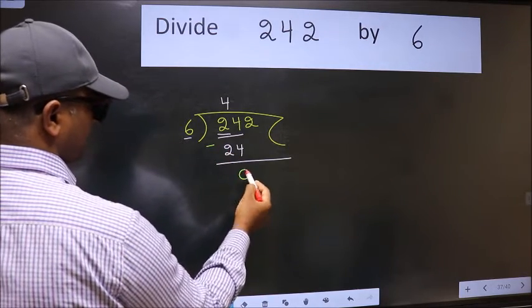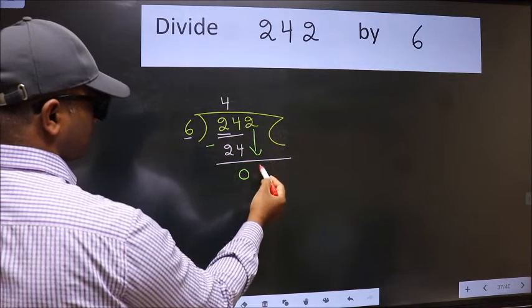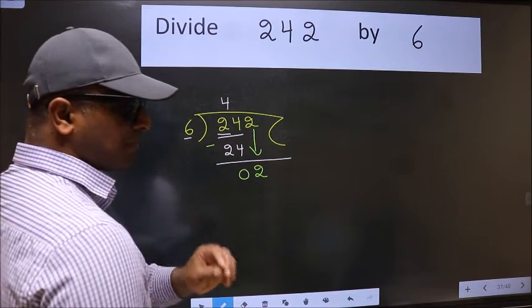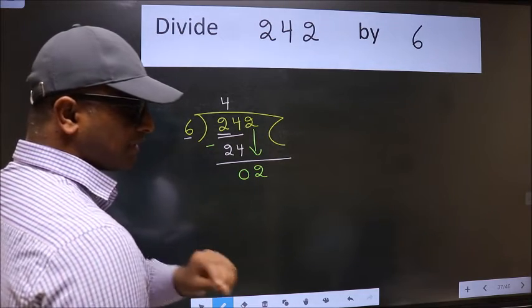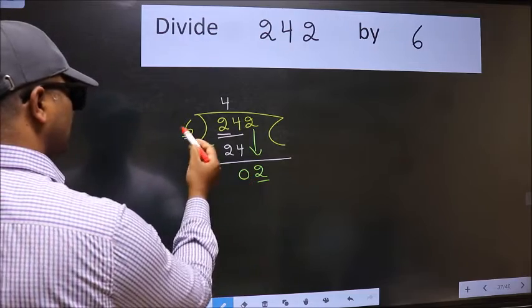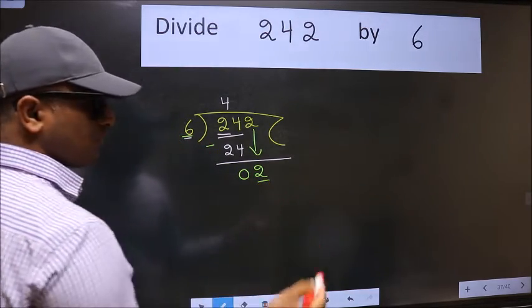After this, bring down the number beside, so 2 comes down. After this step, the mistake happens. The mistake is this: here we have 2 and here 6. 2 is smaller than 6, so what many do is they directly put the decimal point and take 0, which is wrong.